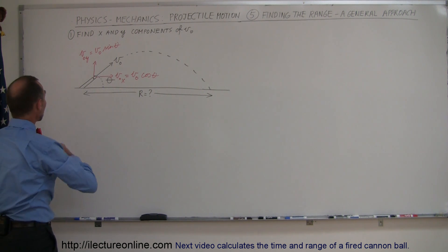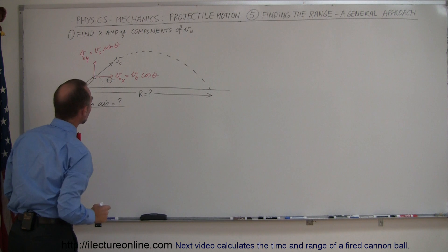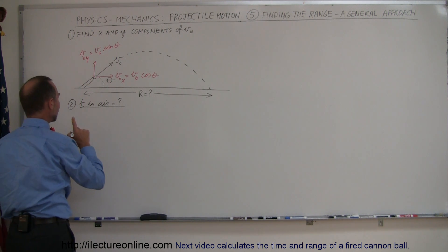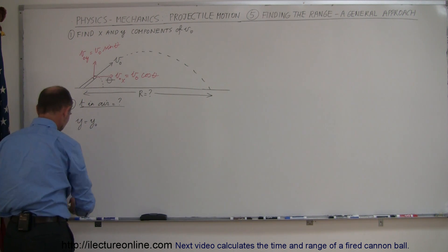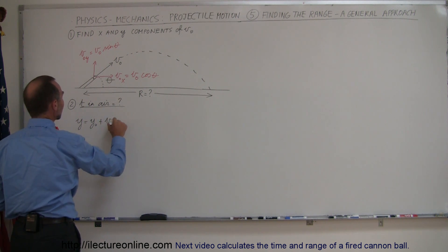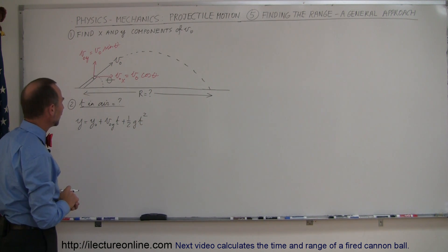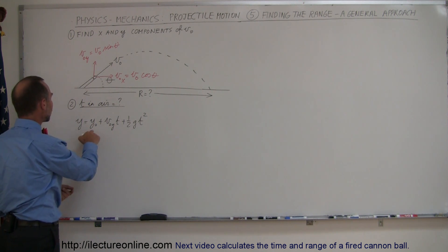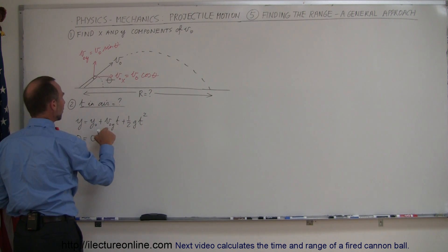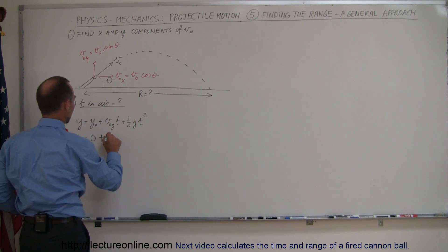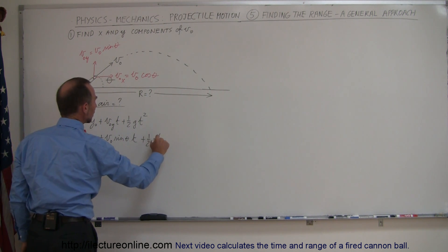The second step will be to find the time in the air. Again we use the same equation as before — only the vertical motion determines the time in the air. So we have y equals y-initial plus v-initial in the y direction times time plus one-half g t squared. Our final height and initial height will both be zero because it starts on the ground and ends on the ground. So we have zero equals zero plus v-initial times the sine of theta times t plus one-half g t squared.